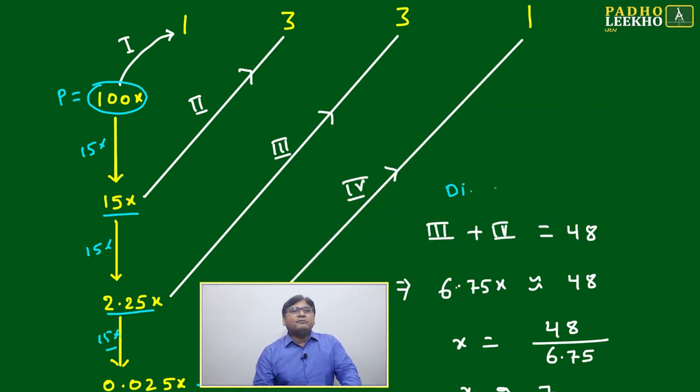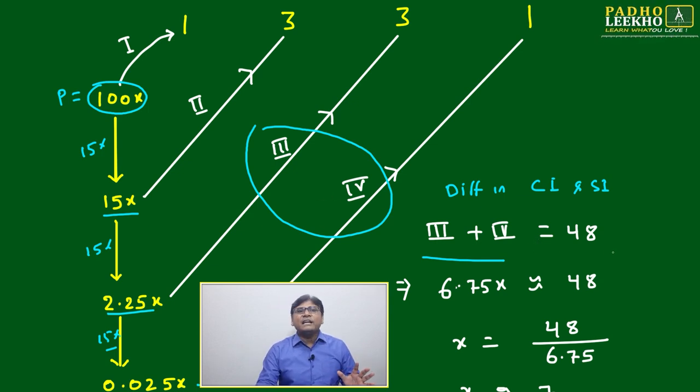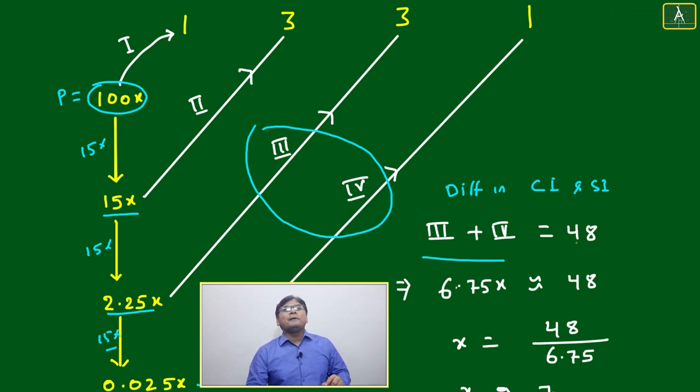Now we have to take the difference in CI and SI. Which one will give that? Third onward. How many lines are there? Third plus fourth combined will equal the difference in CI and SI, which is given in the question as 48.